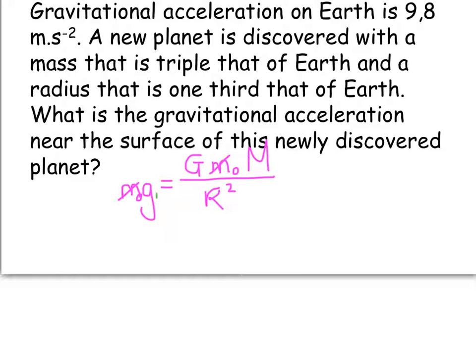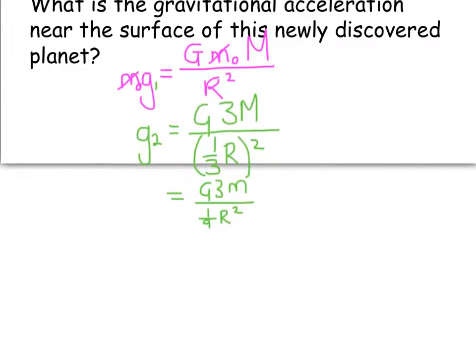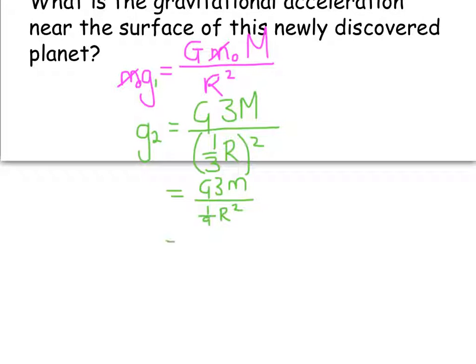Instead of, so this we'll call g1, my new gravitational force is going to be equal to g, a mass that is triple the mass of the Earth, and a radius that is one third. And we're going to have to square one third the radius of the Earth. So let's rework that out, and we get g3m divided by 1 over 9 r squared. Now remember, when you've got a denominator in a denominator, it becomes a numerator. So that's going to become gm times 3. I'm also going to bring this 9 to the top, times 9 over r squared.